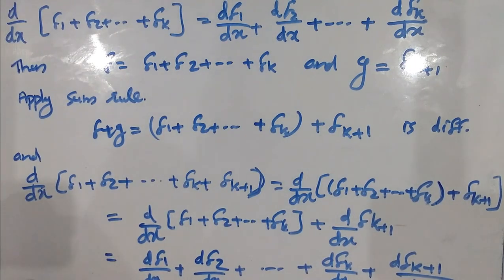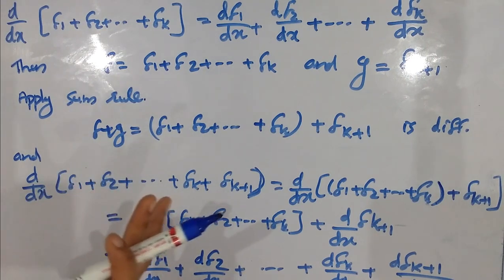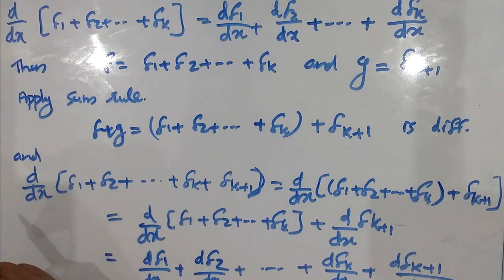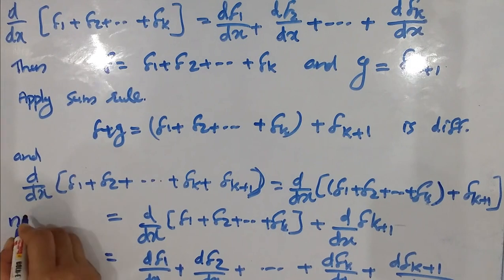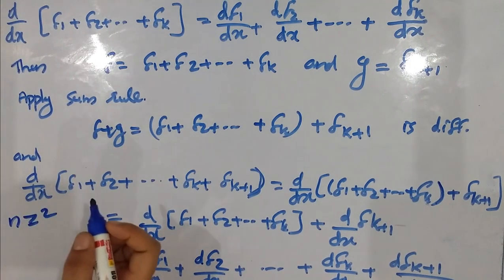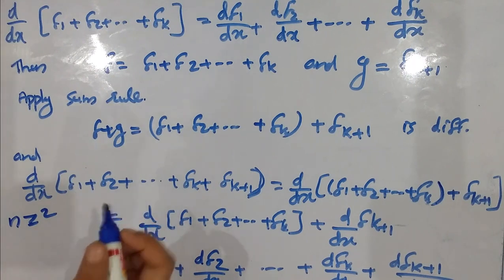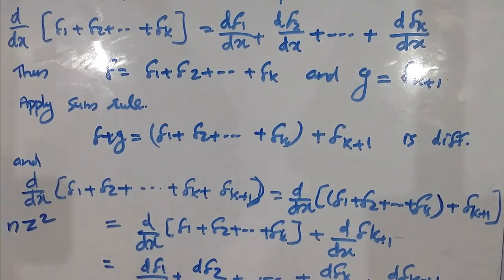Thus if the statement is true for n equal to k, it is true for n equal to k plus 1 also. Hence by the principle of mathematical induction, the given statement is true for all integers n greater than or equal to 2. This is the sum rule — that is true.